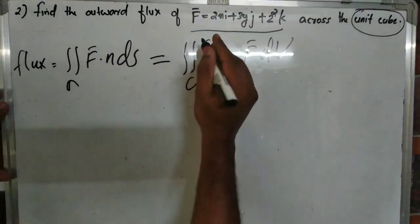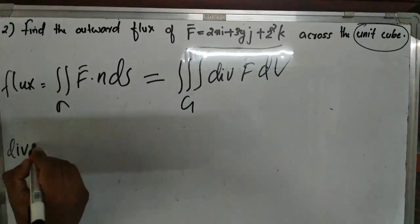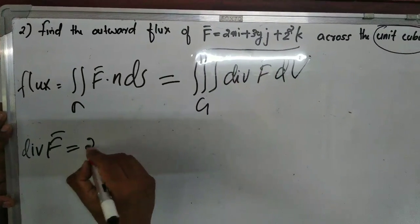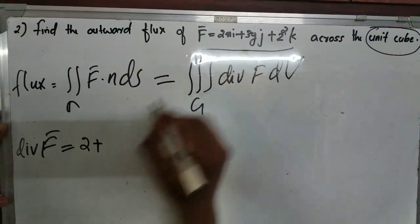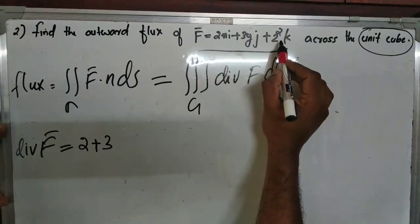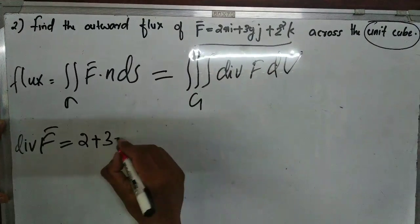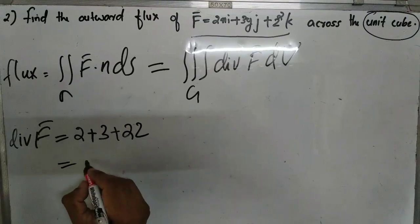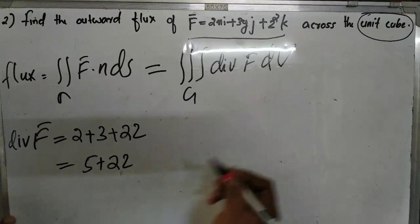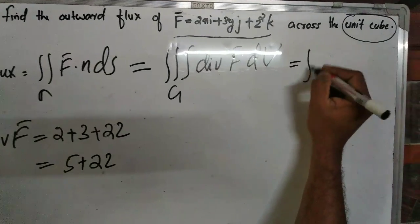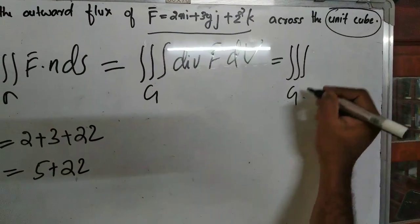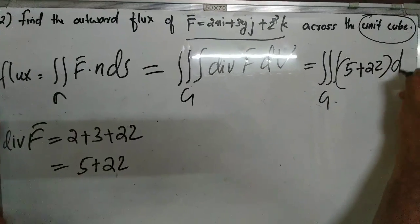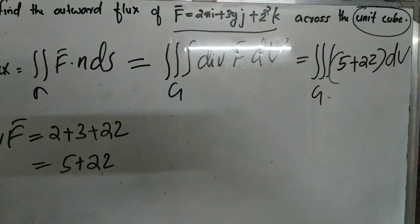So what is div(F)? div(F) equals the partial of 2x with respect to x, which is 2, plus the partial of 3y with respect to y, which is 3, plus the partial of z² with respect to z, which is 2z. That gives 2 + 3 + 2z = 5 + 2z. So this is the triple integral over G of (5 + 2z) dV.